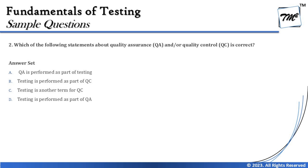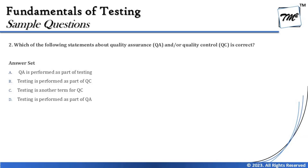Question two asks: which of the following statements about QA and QC is correct? If you haven't watched the foundation tutorials, please do — definitions are covered there per the syllabus. Option A says QA is performed as part of testing — not at all. QA is about defining the process — quality assurance determines the methods, approaches, and processes to achieve quality, similar to test planning. QC is where you actually perform and implement those processes.